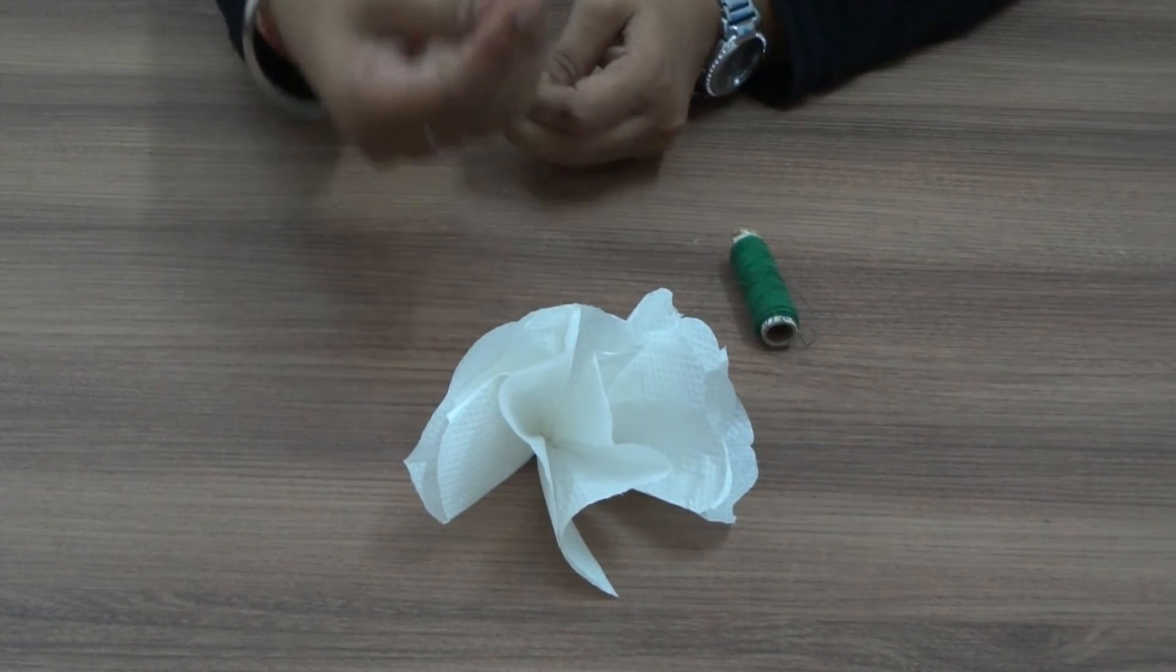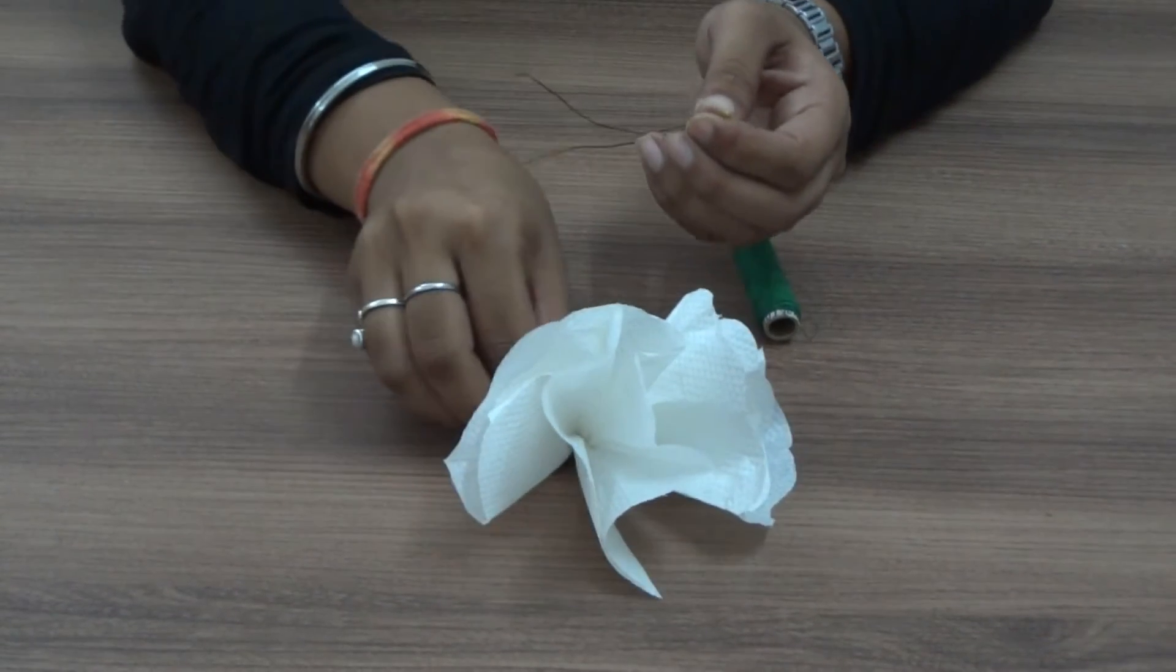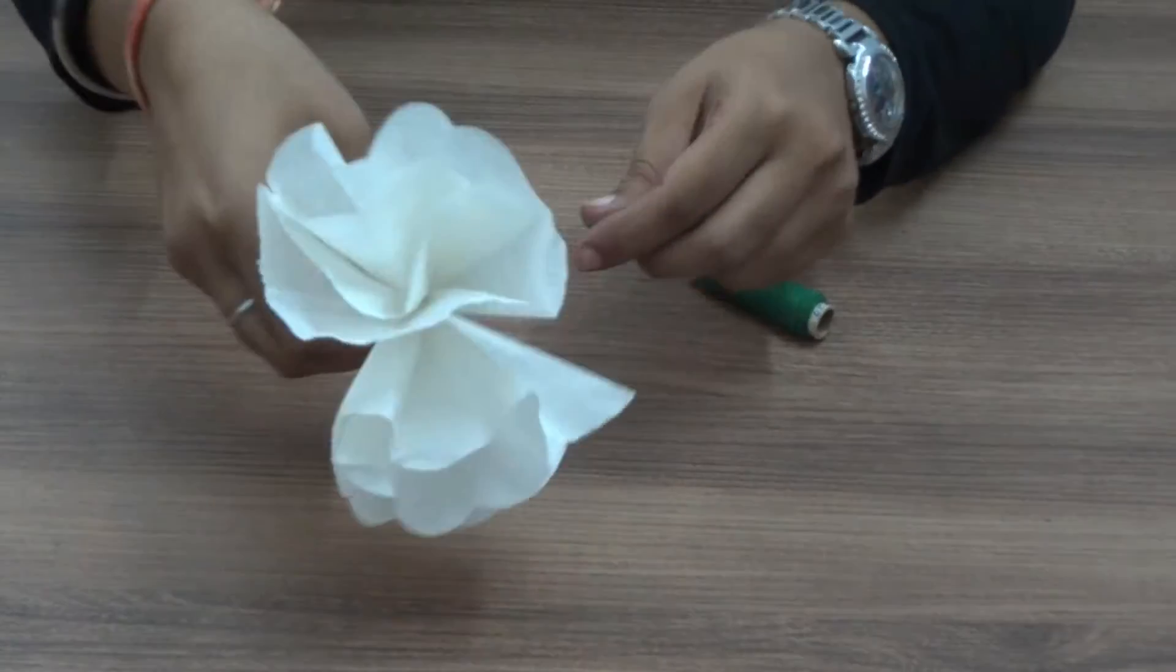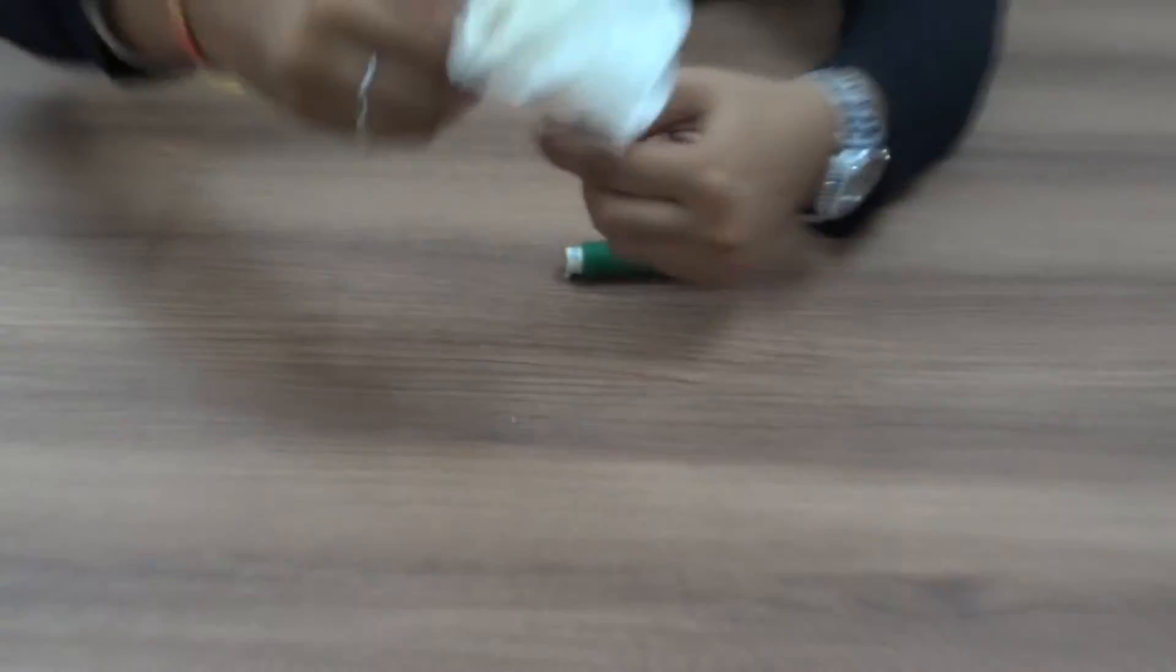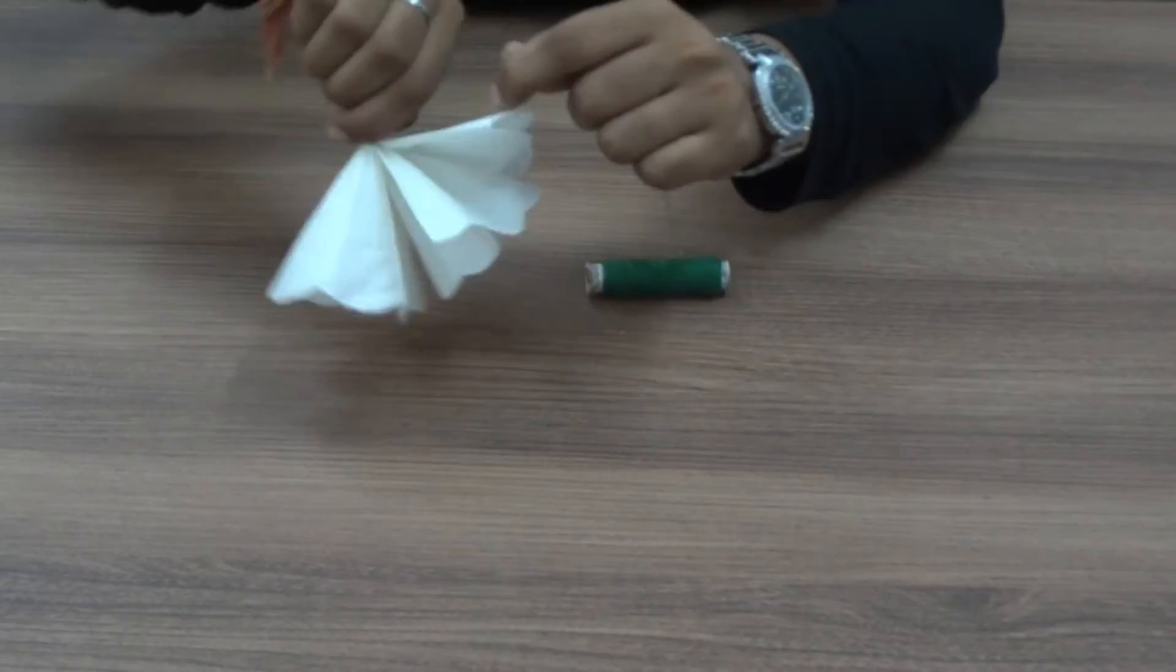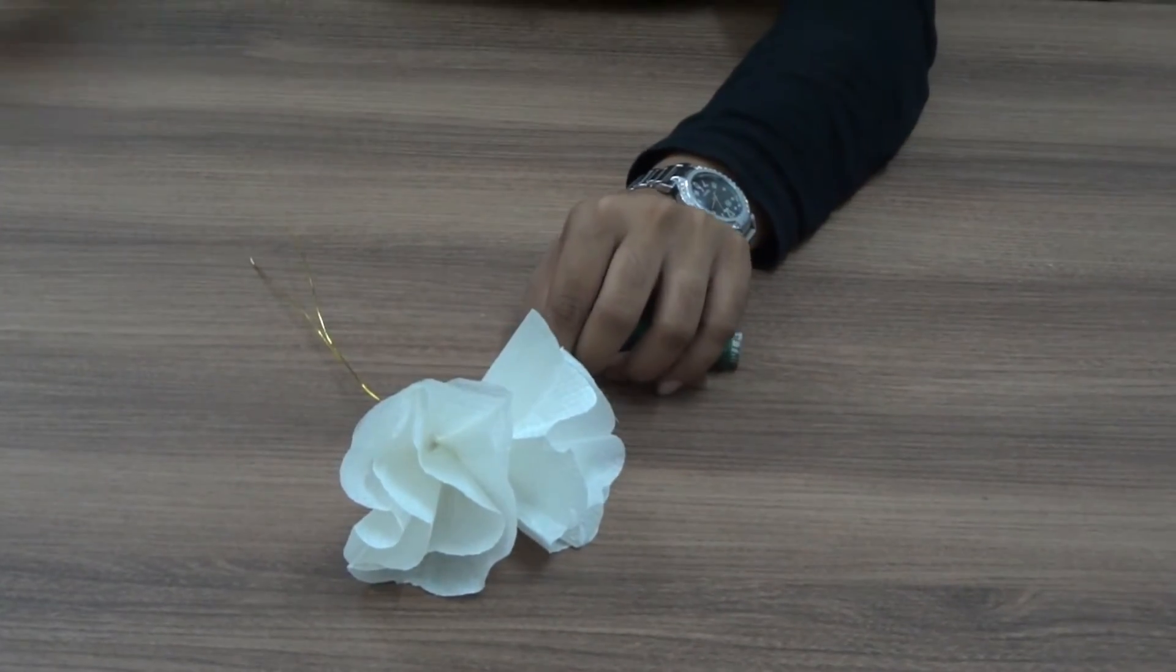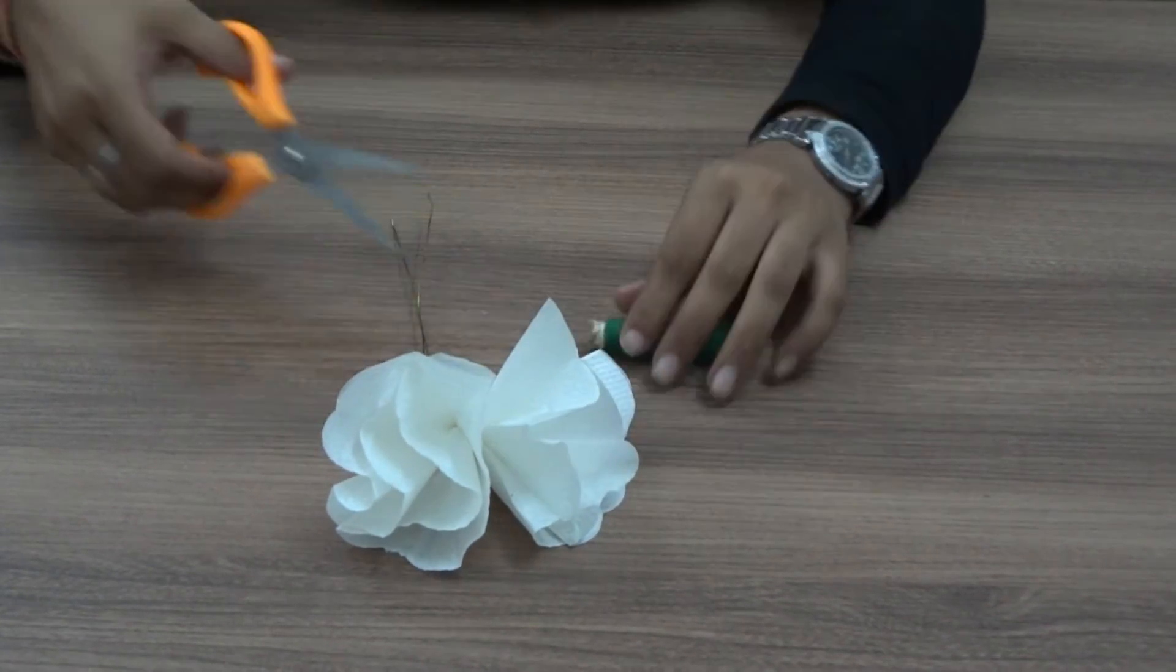We will fold it in the second row, then the third row as well. We will fold it over and then we will add the leaves.